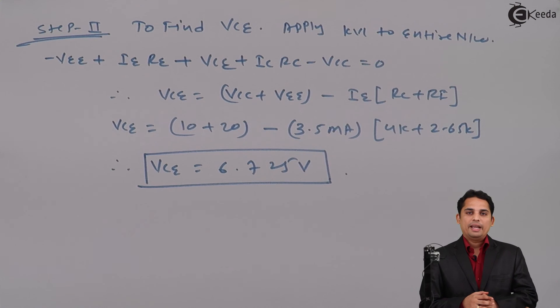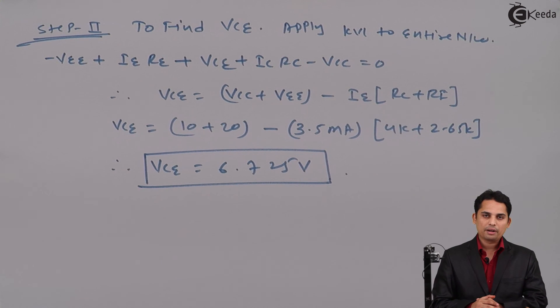So by applying KVL to the entire network, we can get VCE. This is how we can calculate emitter current IE and voltage between collector to emitter in common base configuration. Thank you.